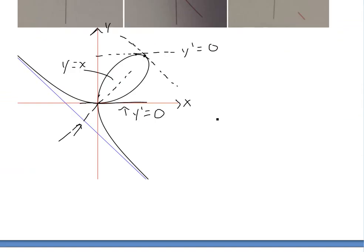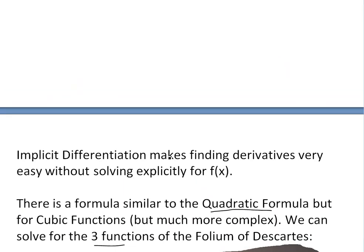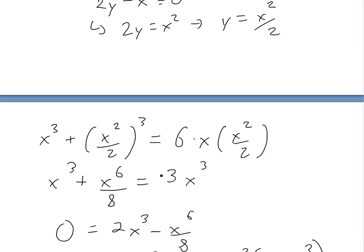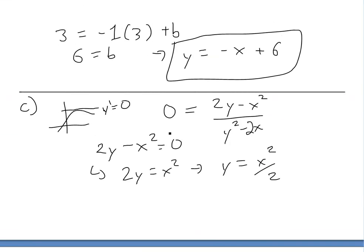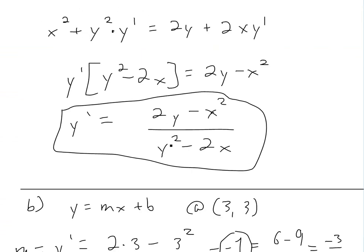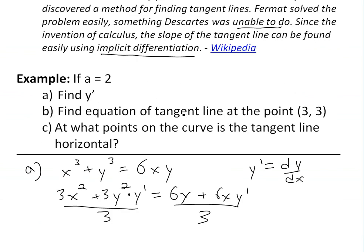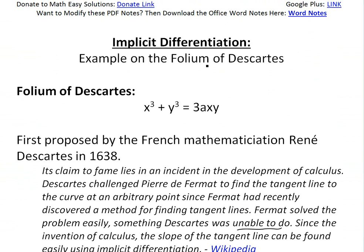Anyway, that's all for today. I hope you learned from this and have a better understanding of the history of mathematics in terms of solving tangent lines, using implicit differentiation, and this pretty interesting folium of Descartes. Remember, you can download these exact notes in the Dropbox link below, so stay tuned for another math easy solution.